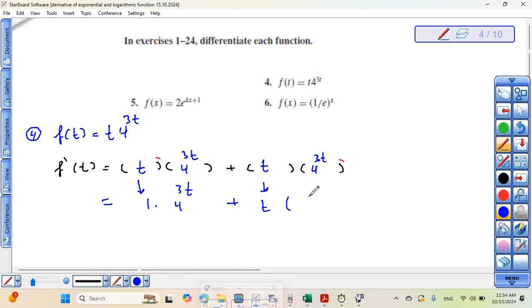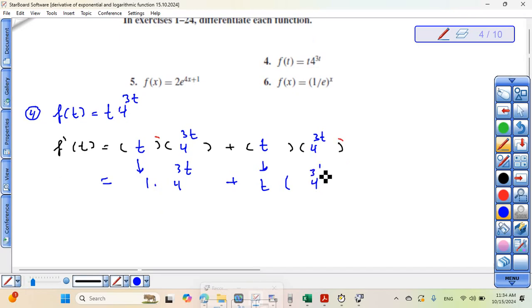We can use the rule to find the derivative of exponential function. Write the same function first. Four to power three t. Then ln the base. What the base here? Four. Ln the base. Ln four. Now the third step. What the derivative of the power? This is the power. What the derivative of three t? Times three. That's it.